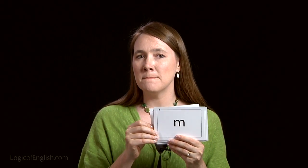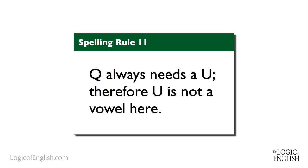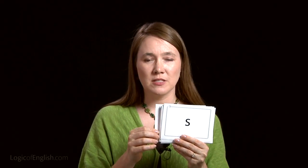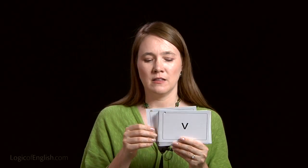J. K. L. M. N. O — O, U. P. Q — notice that Q always needs a U. U is not a vowel here; this is a multi-letter phonogram. R. S — Z. Notice we're teaching both sounds here. T. U has four sounds: U, U, U, U. W. Were there some sounds that were new for you? I know that when I first began to learn the Logic of English, some of them were surprising to me.